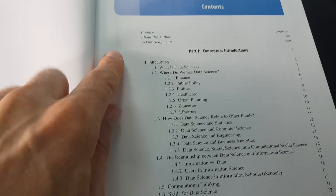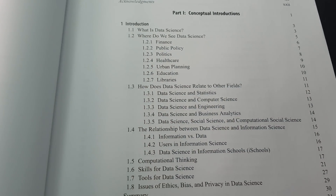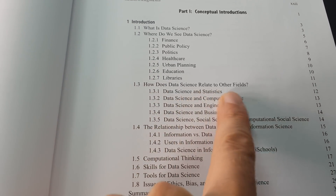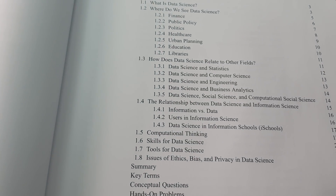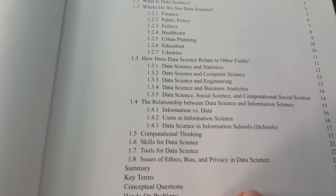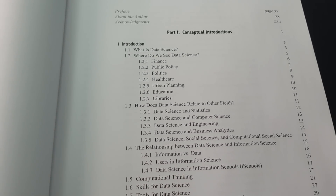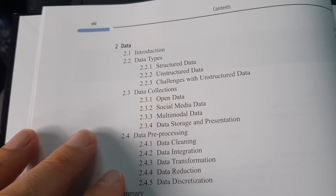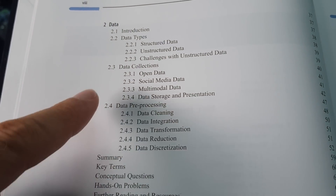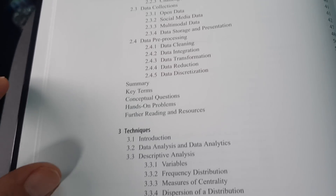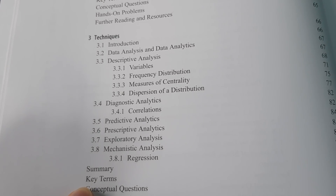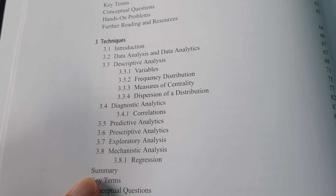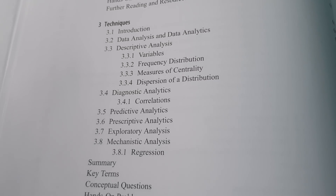Let's take a look at the contents. The first chapter is an introduction about what data science is, where you'll find applications of data science, and how it relates to other fields. There's also a section on computational thinking and the skills and tools required for data science — so you can really start with no knowledge at all. The next chapter covers what data is, what forms it comes in, where to find data, how to pre-process it, and then basic data analysis, descriptive statistics, and predictive analytics.